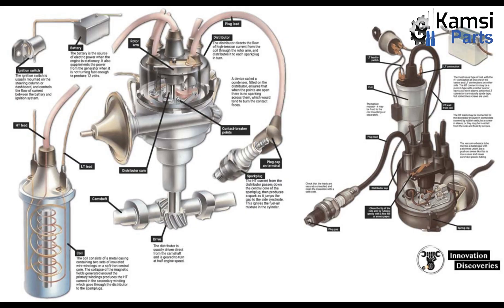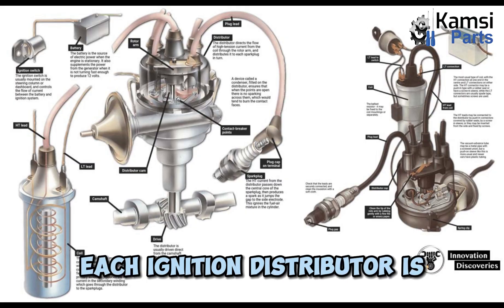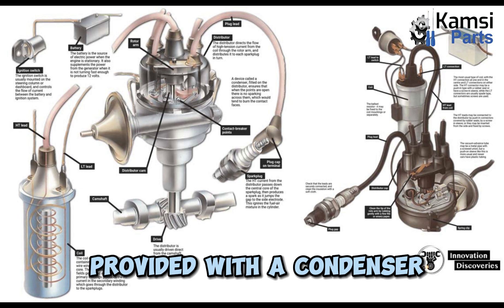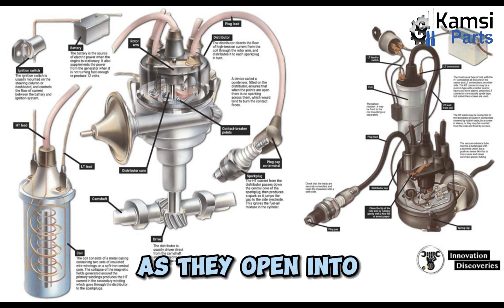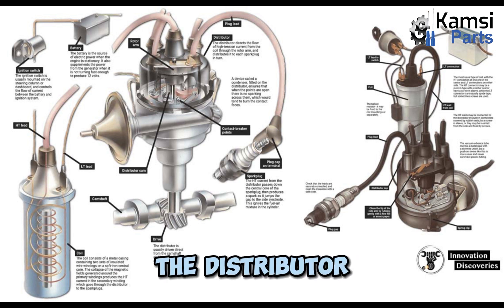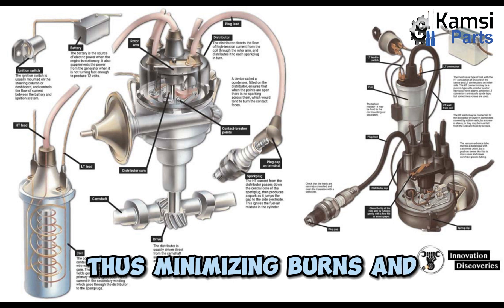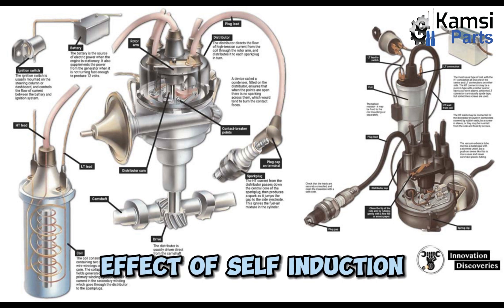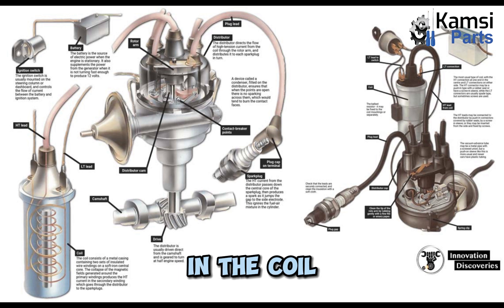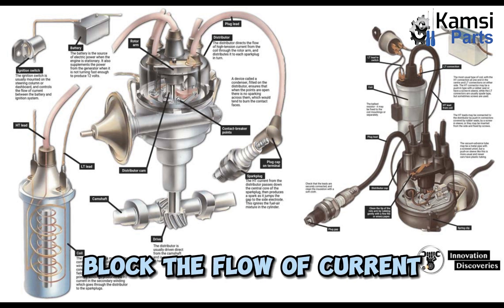3. Condenser. Each ignition distributor is provided with a condenser at the contact points to reduce sparks as they open into the distributor, thus minimizing burns and pitting of the points. Arcing occurs due to the effect of self-induction in the coil as the points block the flow of current.